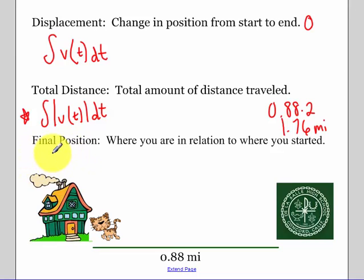Final position is your initial position plus your displacement. So say you have an initial position of 5, and you've traveled negative 7, your final position would be negative 2.